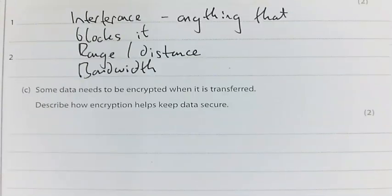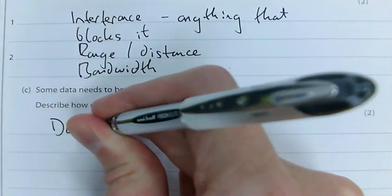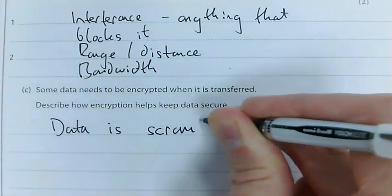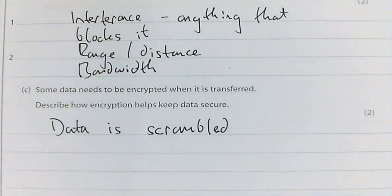Part C: Some data needs to be encrypted when it's transferred. Describe how encryption helps to keep the data secure. Two marks. Encryption is when the data is scrambled. There's different ways of doing that which we won't go into here, but you just need to write data has been scrambled.